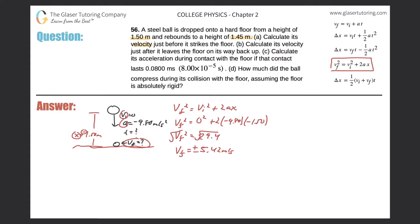Now, which sign do you choose? Consider the direction of motion — which way is the ball going? It's moving down, so we choose the negative direction. The final velocity is negative 5.42 meters per second. That's fairly straightforward, and that completes letter A.